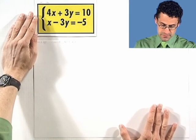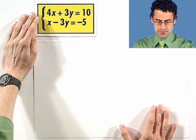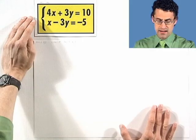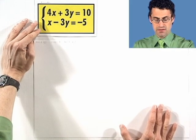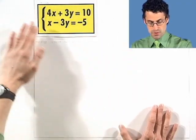Let me show you what I mean by looking at an example, and you'll see in the example why it's called elimination. Let's take a look at this system right here. So I have these two linear equations, 4x plus 3y equals 10, and x minus 3y equals negative 5. And what I'd like to do is find the solution that satisfies both of them simultaneously.